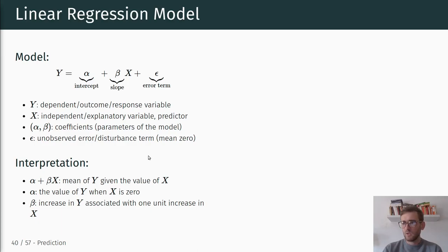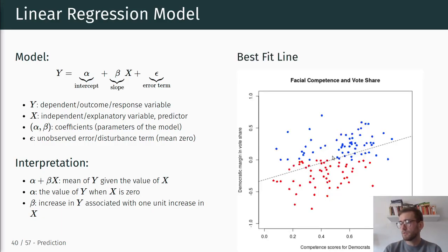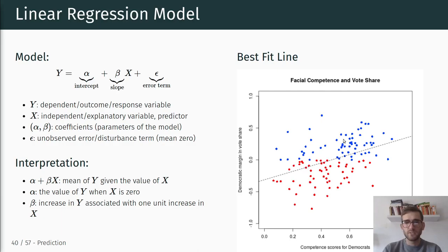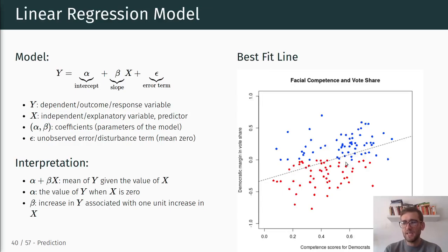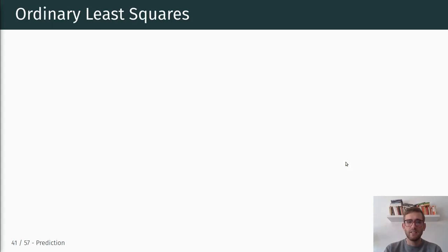So with every unit increase in our independent variable — for example, the competence rating increasing by one unit — how much on average does that increase our dependent variable, the vote margin? In this framework, we want to find the best-fit line through this cloud of points that describes the relationship between competence scores for Democrats and the Democratic margin in vote share. Not knowing alpha and beta, we could draw different lines with different intercepts and slopes, but ultimately we want to find the line that best describes this linear relationship.